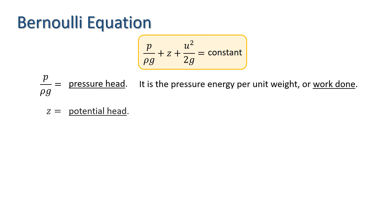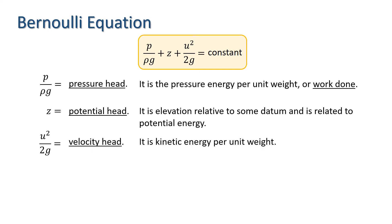The second term is the elevation Z relative to our datum, and is referred to as the potential head, because it relates to potential energy. And the third term, U squared over 2g, is called the velocity head, and is the kinetic energy per unit weight.